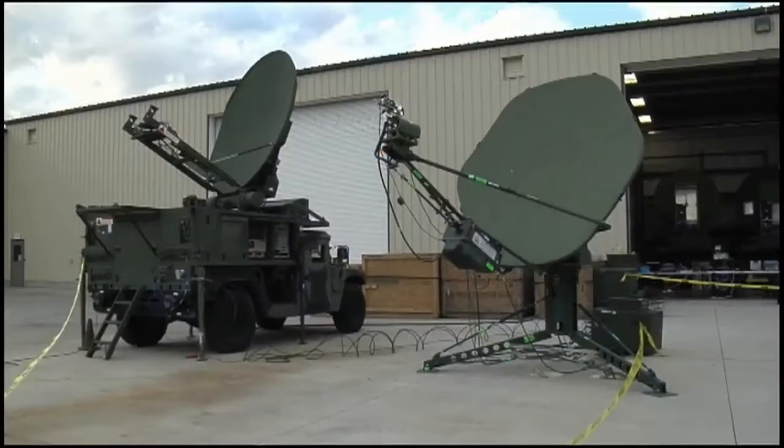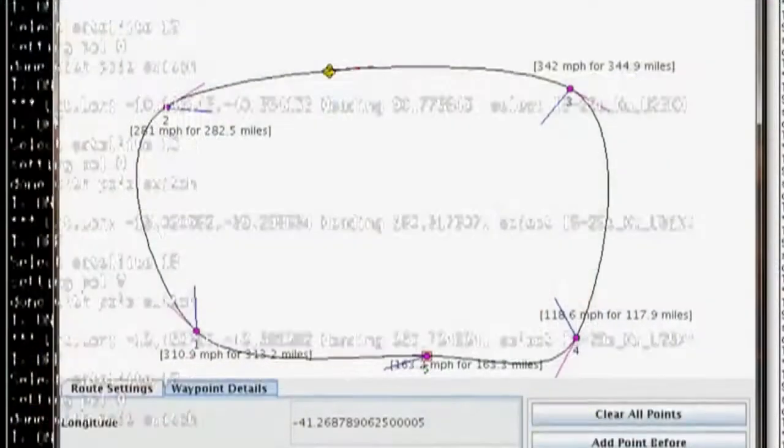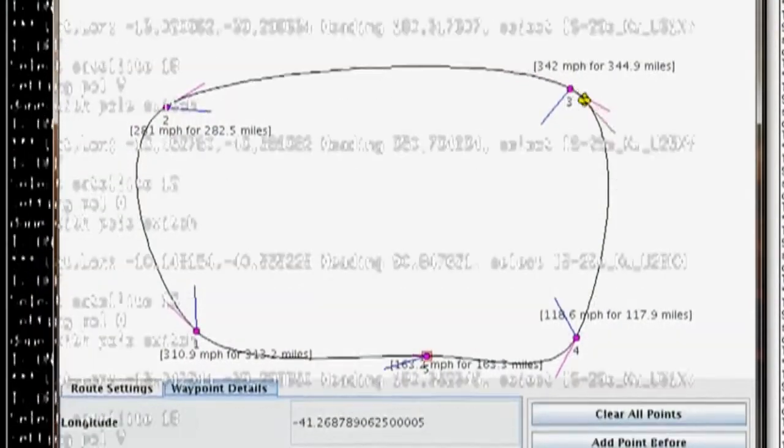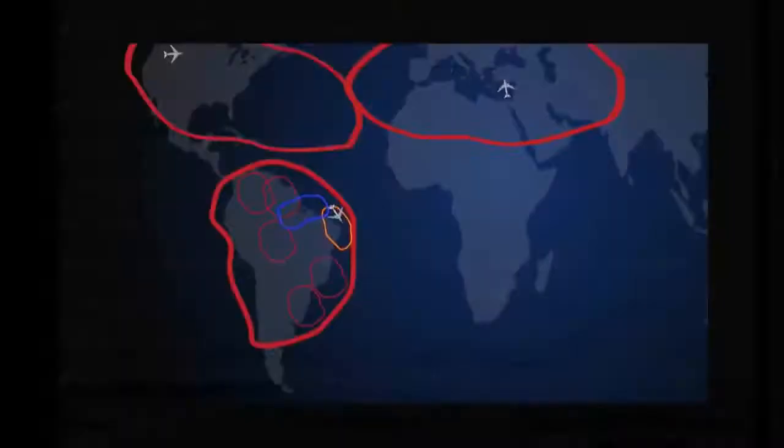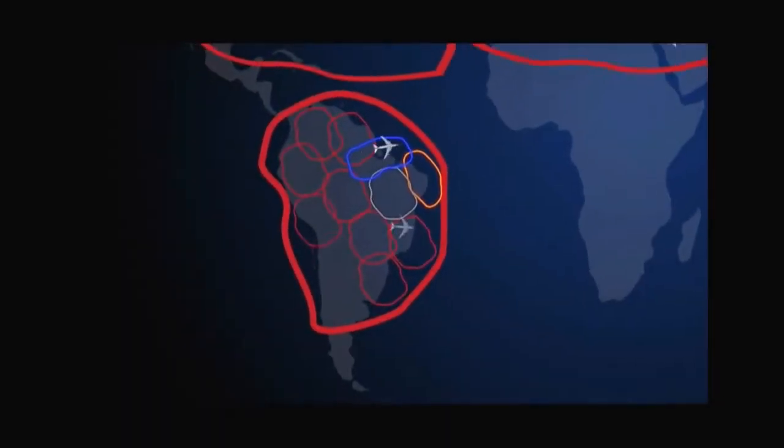Using real air and ground satellite terminals, the navigation simulator provided data over the satellite that simulated a UAV flying through three beams in KU band over Latin America.